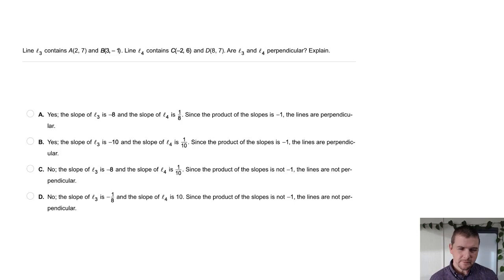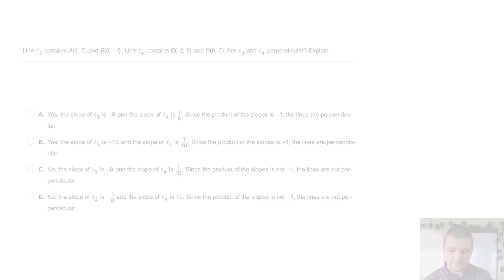Your turn. Line L3 contains these points: 2, 7 and 3, negative 1. Line L4 contains negative 2, 6 and 8, 7. Are line 3 and line 4 perpendicular? Explain.